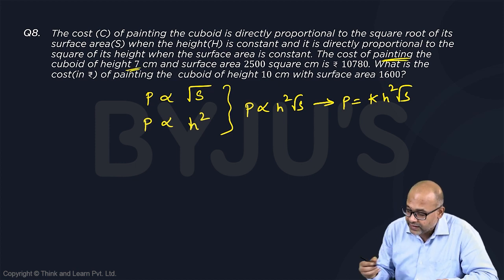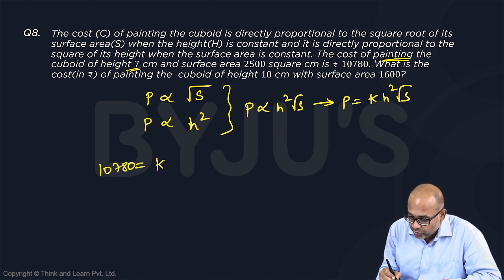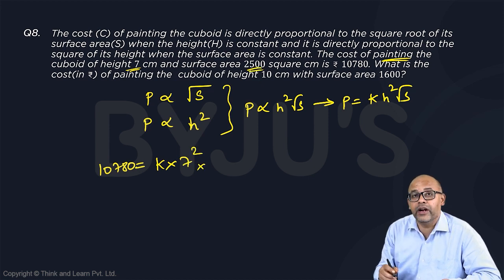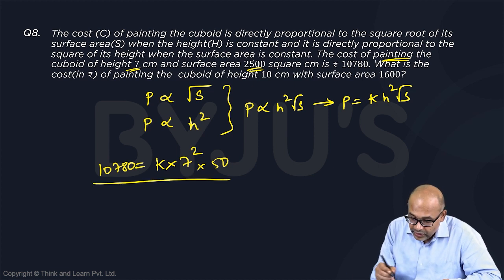Now, the cost of painting the cuboid of height 7 cm is 10,780. So 10,780 equals k times 7² times root of 2500. Root of 2500 is 50. In the second case, the cost now becomes...